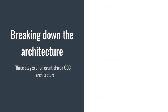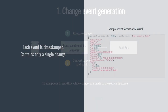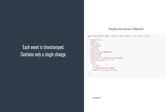Let's break down the architecture into three stages: change event generation, event ingestion, and change event propagation. In the event generation stage, the transaction log mining component detects changes made to the source database by observing the transaction log. Changes are formatted as events and published to the event bus. CDC tools typically have log mining components built for each database. Unlike ETL systems, changes are detected and delivered in real time. Each change event is timestamped and contains only a single change — if there are two operations, there will be two corresponding change events.